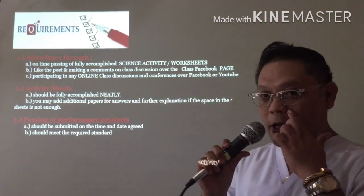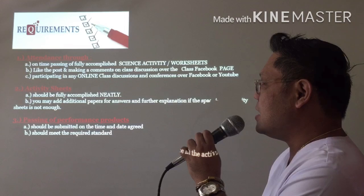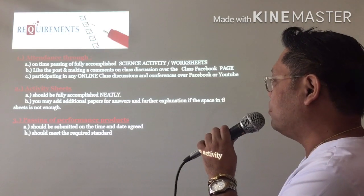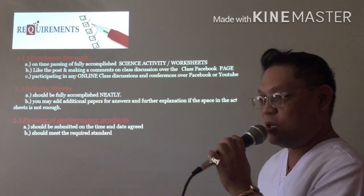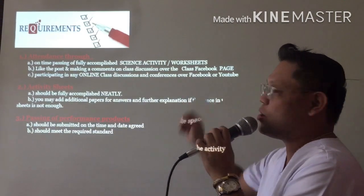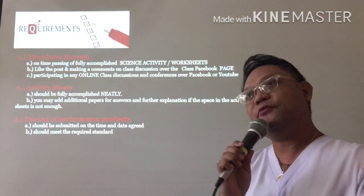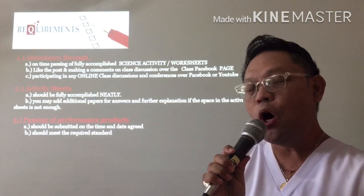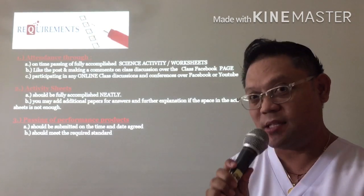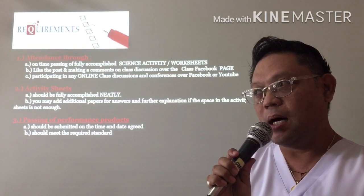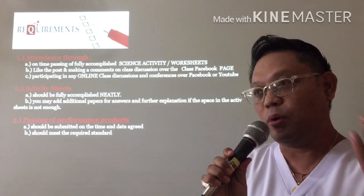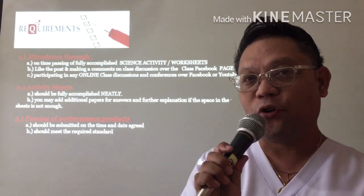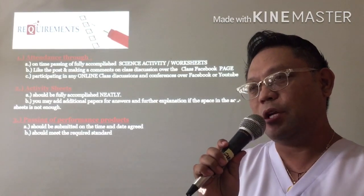First is the requirements. Number one, attendance: A — on time passing of fully accomplished science activity or worksheets. How do I assess your attendance through science activity? Because you are all from grade 9, grade 10, 11, and 12, you're old enough to know when the teacher would need your performances, especially your written worksheets, when they will be delivered or given back to the teachers. In that way, I would know if you are doing your activity sheets, and by that I will know that you are present.